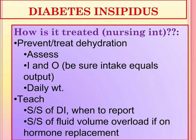What are nursing interventions for diabetes insipidus? Preventing and treating dehydration is the priority. You need to assess for dehydration by monitoring vital signs, skin, and mucous membranes. Monitor intake and output very carefully, ensuring intake equals output and that output is not increasing — report it if it does. Perform daily weights, ideally on the same scale at the same time of day.